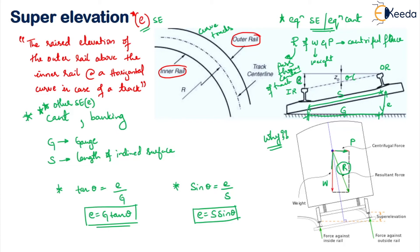When equilibrium super elevation is provided, the resultant force R will act perpendicular to the surface of the track — it will act exactly perpendicular to the surface. Hence, there will be no lateral thrust on the rail. If there is no lateral thrust, the rail will not tilt and will stay in position.